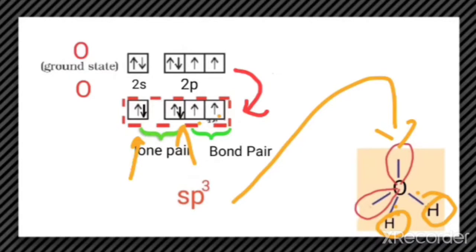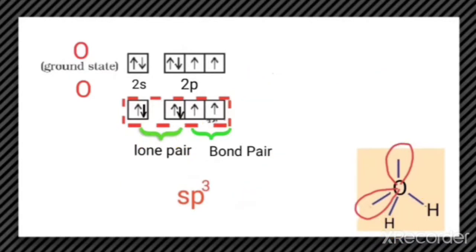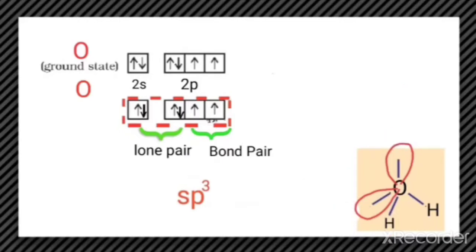Since sp3 hybridization results in tetrahedral geometry, out of the four hybrid orbitals two are forming bonds with hydrogen and the other two remain as lone pairs. So two electrons remain as lone pairs. This is the structure of the water molecule.